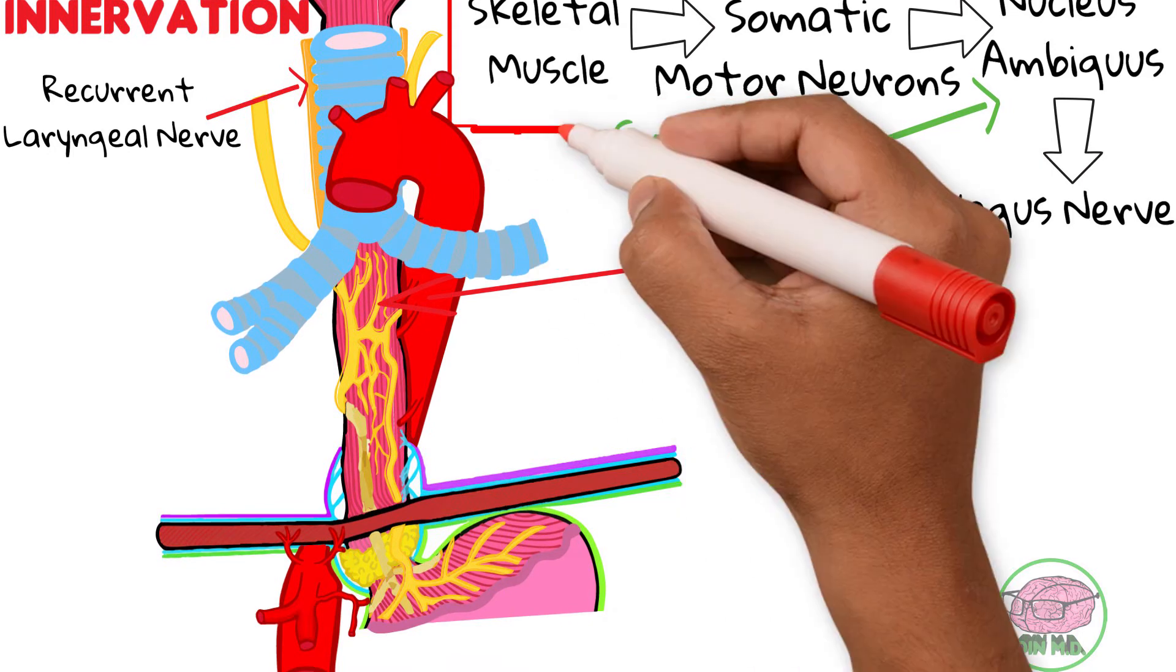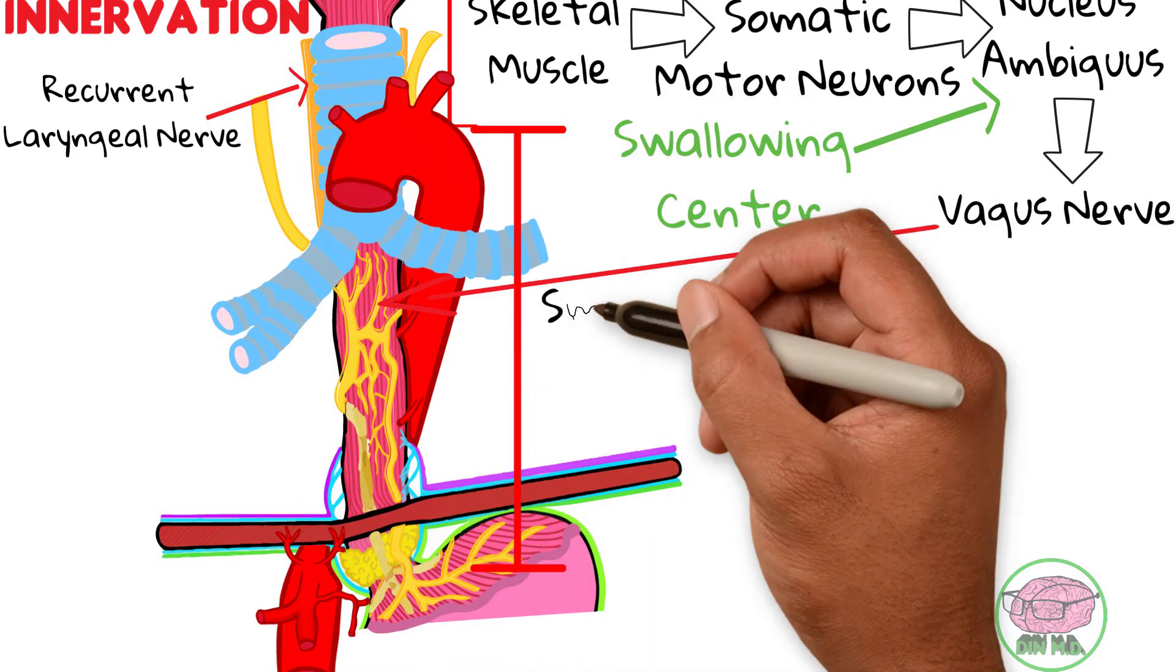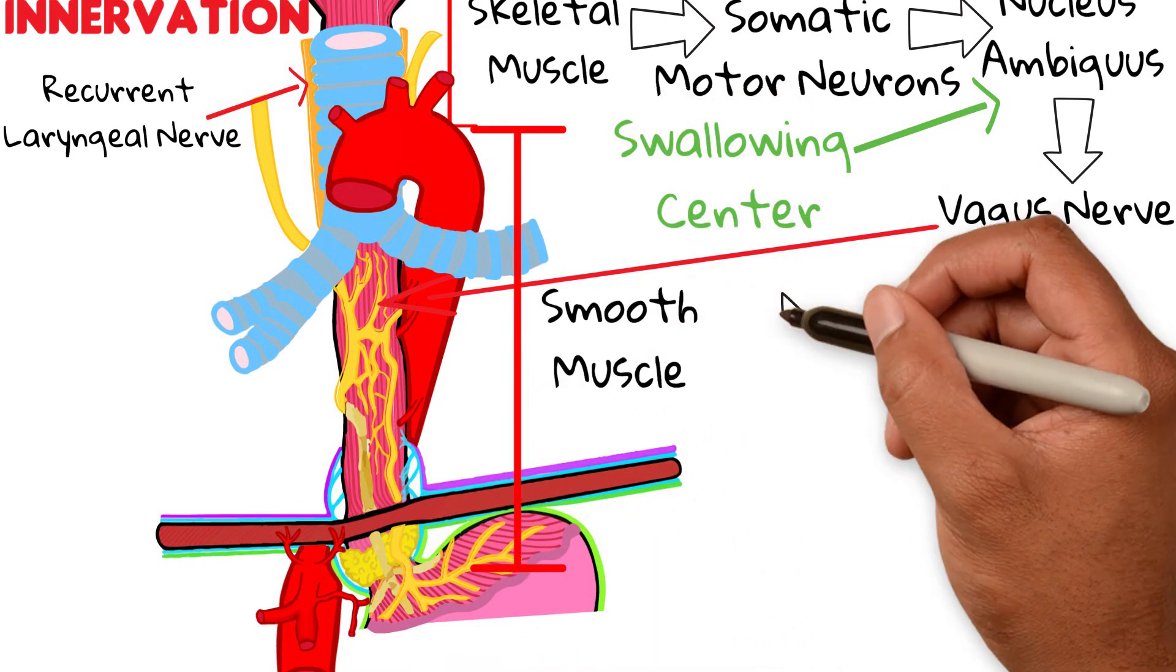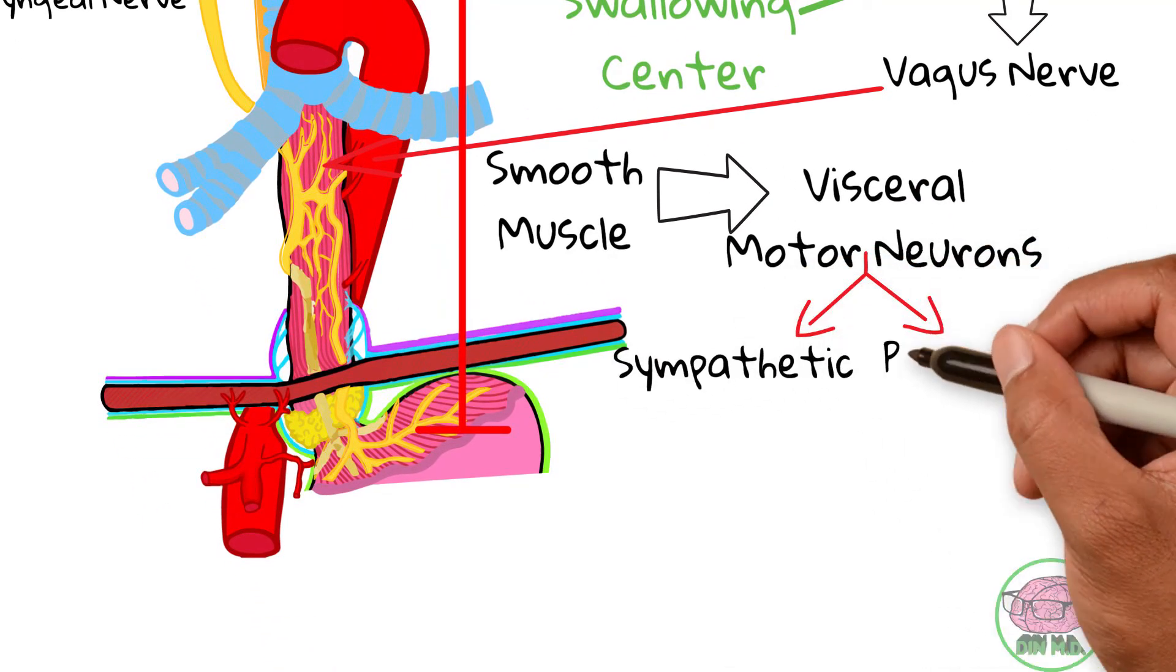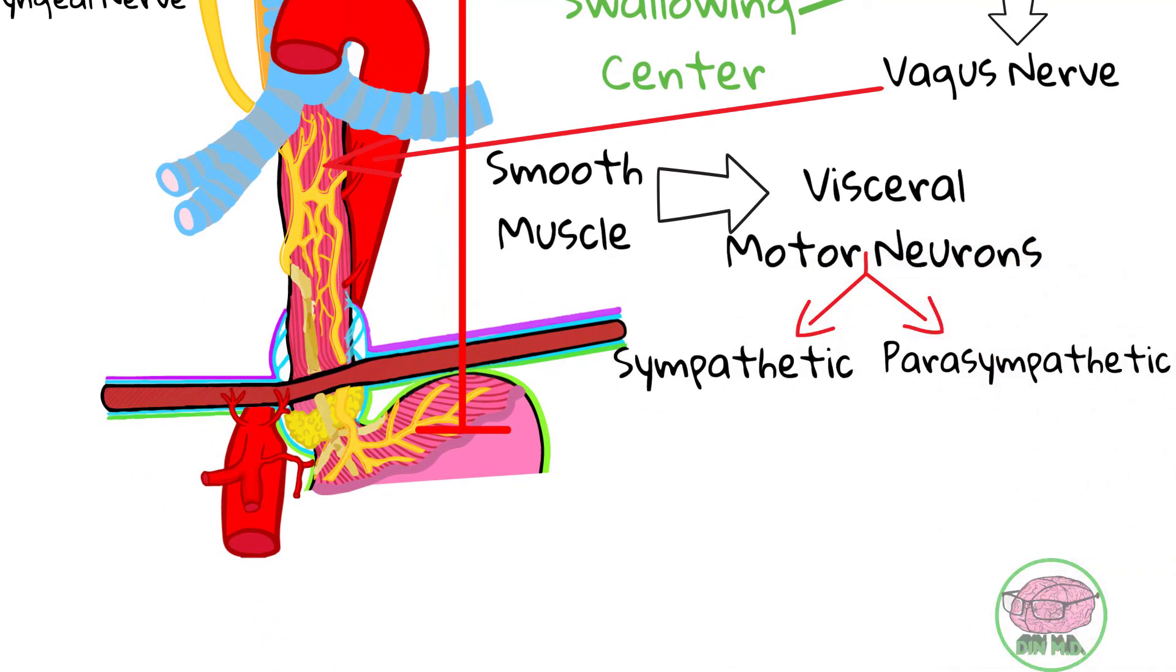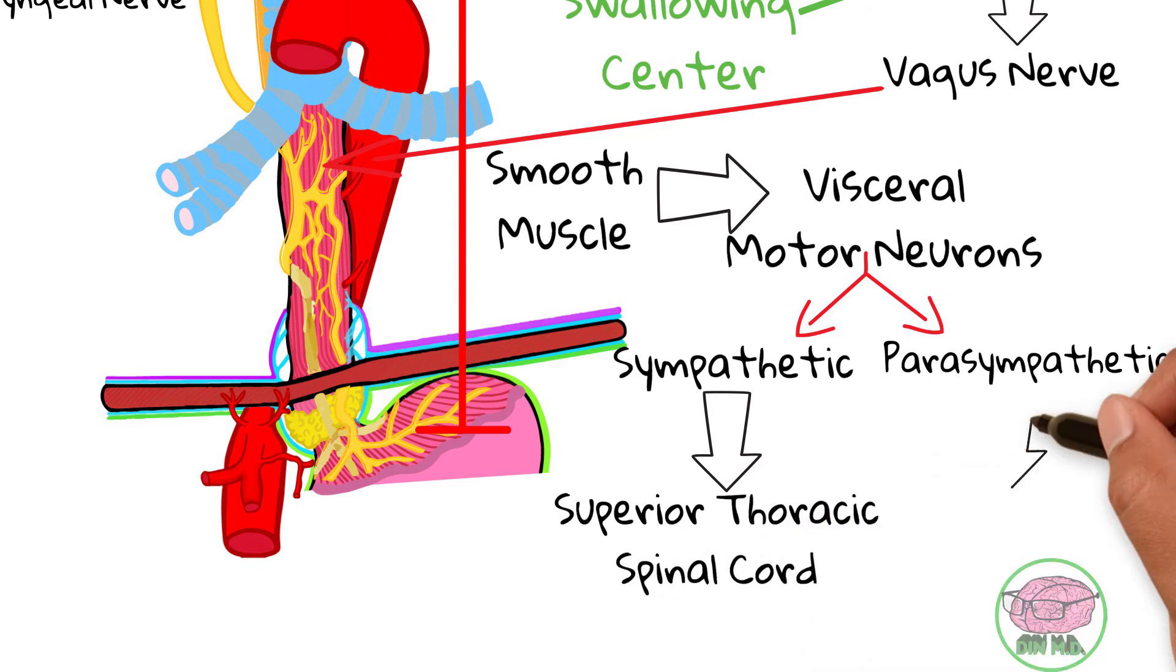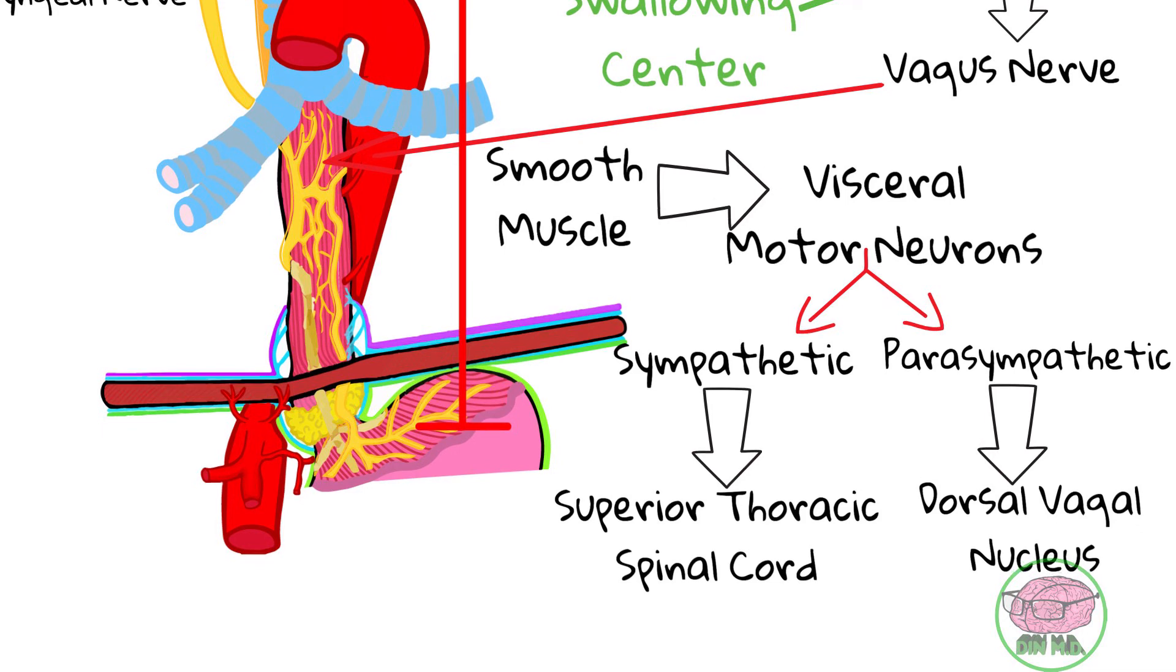The lower two-thirds of the esophagus, being a smooth muscle, is innervated by visceral motor neurons, the sympathetic and the parasympathetic nervous systems. The sympathetic nervous system for the esophagus originates from the superior thoracic segments of the spinal cord, while the parasympathetic nervous system for the esophagus originates from the vagus nerve, specifically from the dorsal vagal nucleus, which is also located in the brainstem.